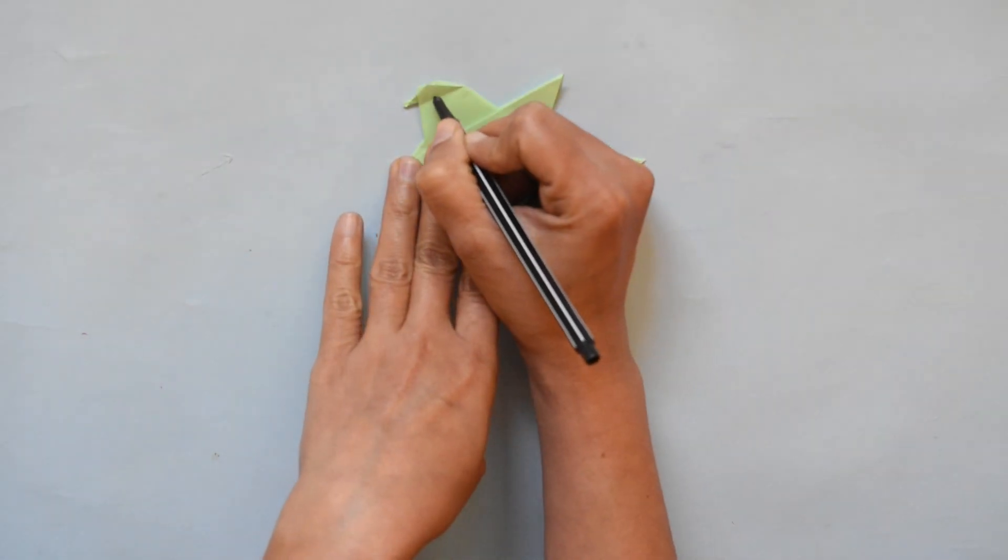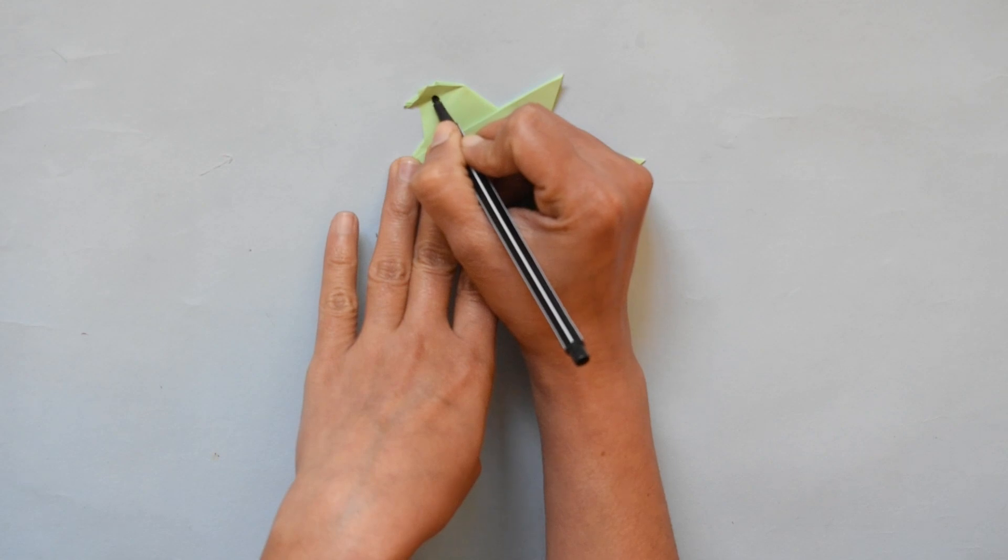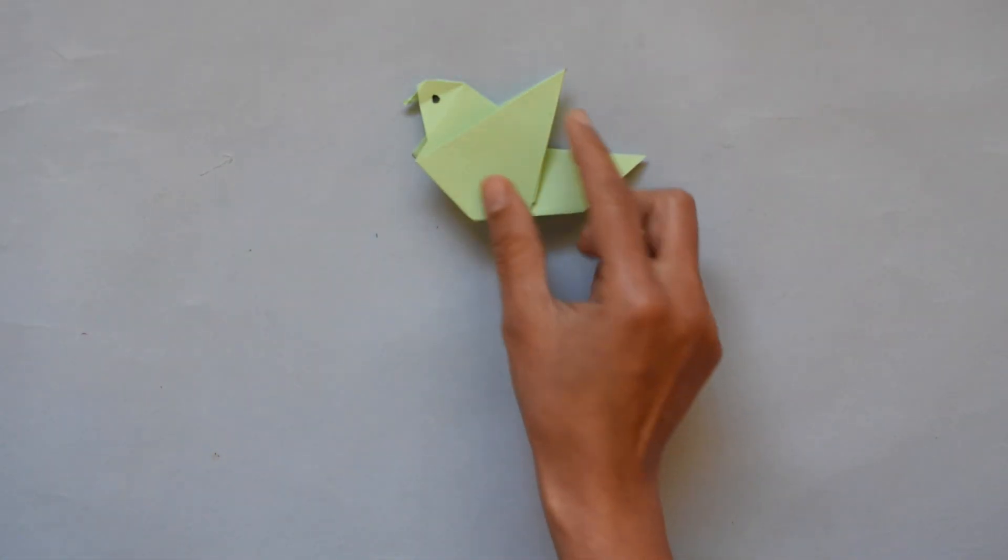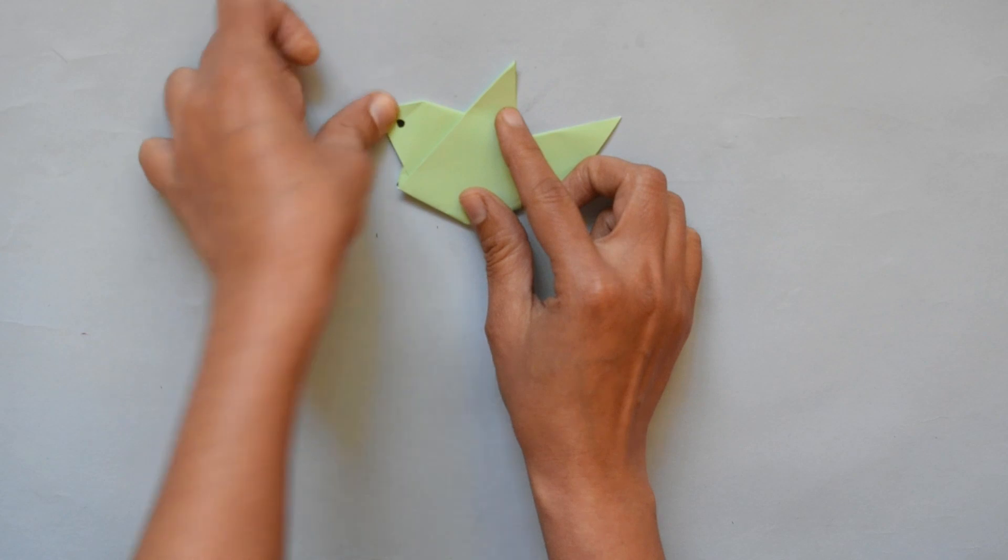Now draw eyes with a marker and here our paper bird is ready.